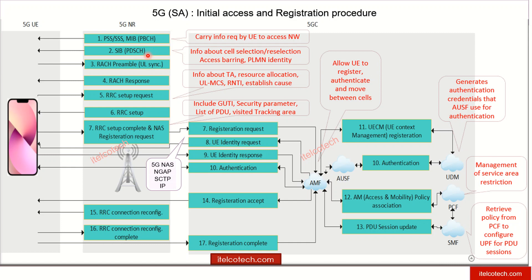After downlink synchronization is done, uplink synchronization needs to be performed, and for that the UE will send a RACH preamble. After that, there is a response going down from the base station to the UE, which gives back a response that this particular UE is allowed to connect and is now synchronized with the network.